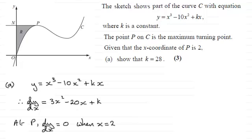So if we just substitute these values into our result here for dy/dx, then we're going to have 3 multiplied by 2 squared, minus 20 times 2, plus the constant k is going to equal 0.